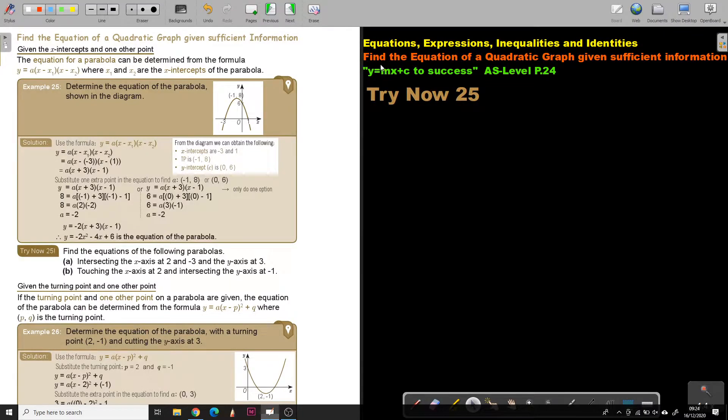In this video, we are going to find the equation of a quadratic graph given sufficient information. You will find this on page 24 in the Namibia AS level mathematics textbook Y equals MX plus C to 6S. Now find the equation of a quadratic graph given sufficient information. So they will give you the information and you must find the equation.